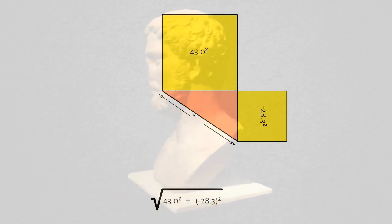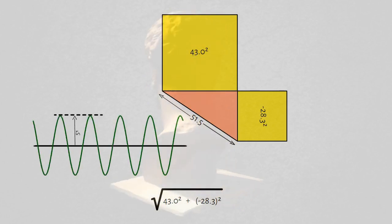So the length of the hypotenuse of this triangle is the square root of 43.0 squared plus minus 28.3 squared, which equals 51.5, which is the magnitude of this sinusoid in the list.